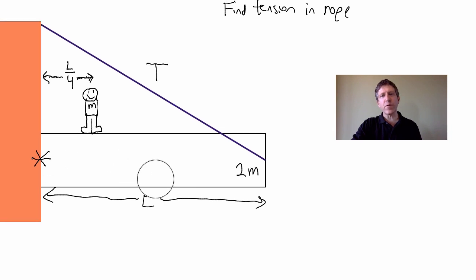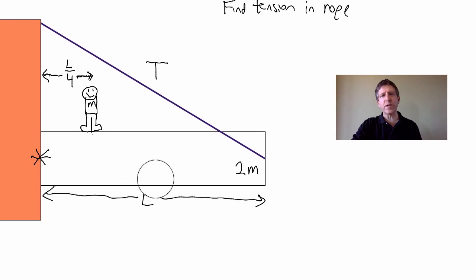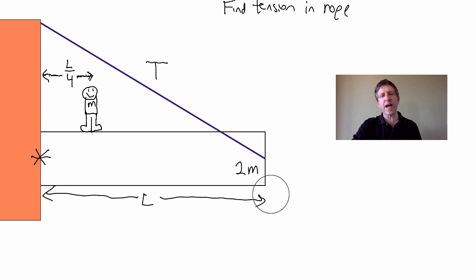Our question here is: what is the tension in this rope when the worker is a quarter of the way out along the length L of the sign? Let's go ahead and use our problem-solving strategies to try to solve this.